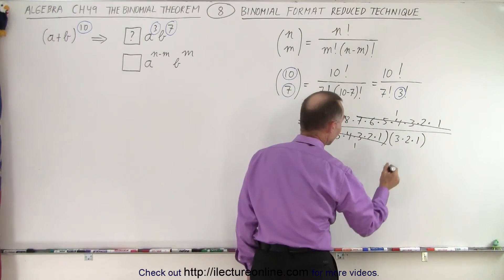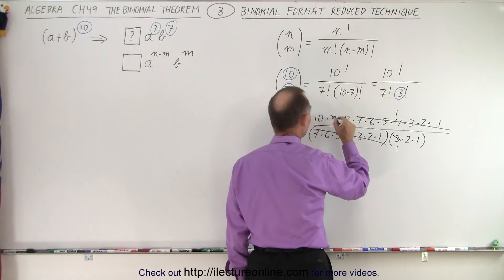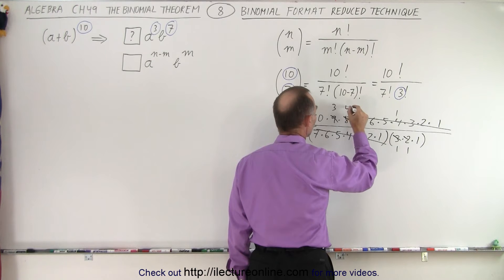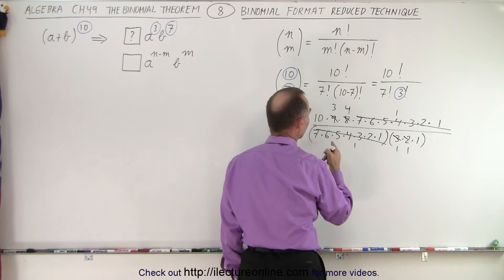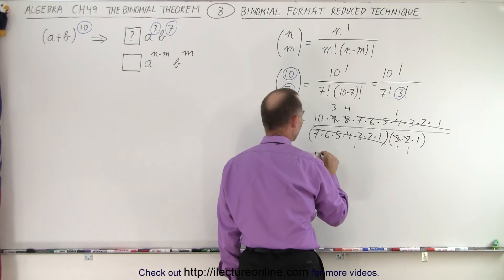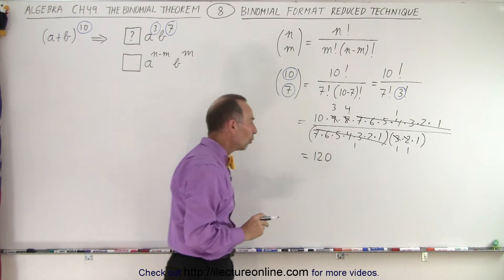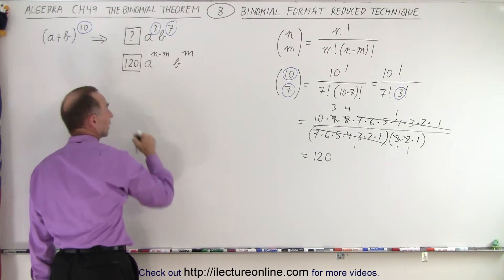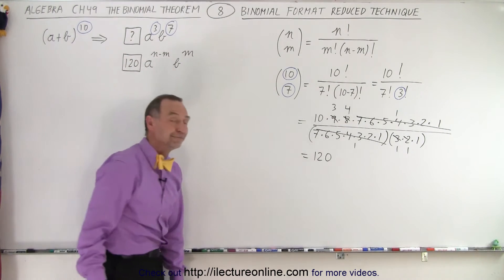Then we can simplify things a little bit more. This 3 would cancel out with this 9 and this 2 will cancel out with this 8, becomes a 4. And now when we multiply the numerator, we get 3 times 4, which is 12 times 10, which is equal to 120. So you can see that the numerical coefficient we're looking for is 120, which is what we obtained over here.